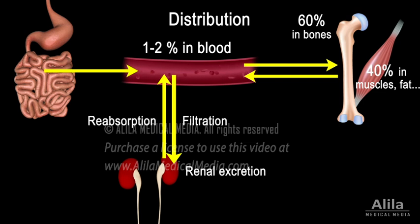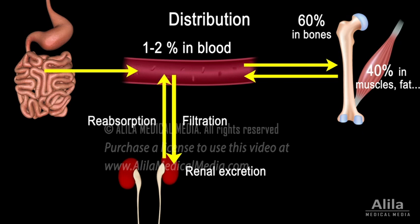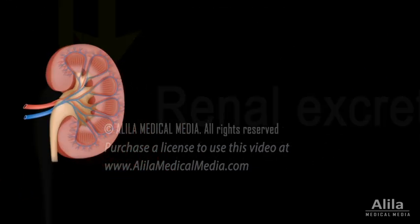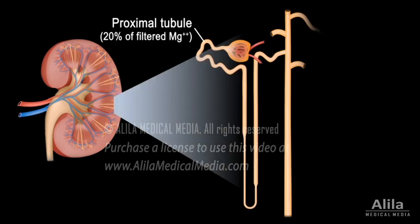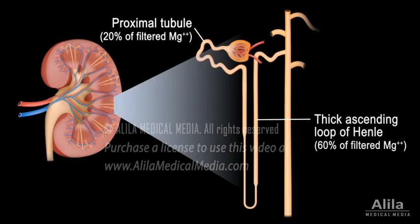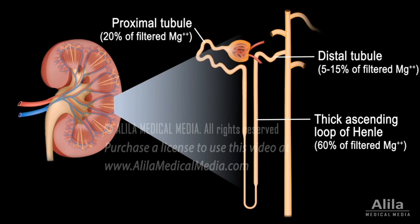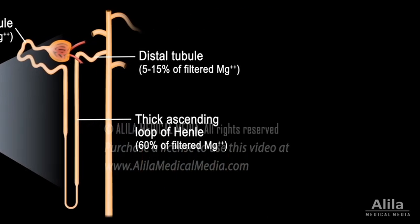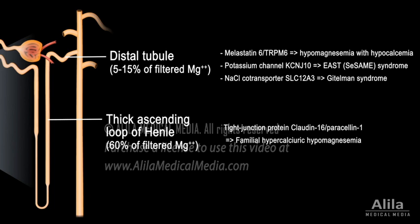In the kidney, serum magnesium is filtered into the glomerular filtrate, but most of it is promptly reabsorbed back to the blood. Reabsorption occurs mainly in the proximal convoluted tubule, the thick ascending loop of Henle, and the distal convoluted tubule. A number of ion channels, transporters, as well as tight junction proteins are responsible for magnesium transport in different parts of the nephron.